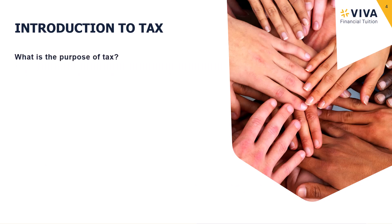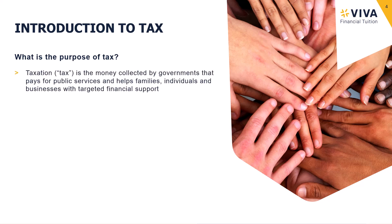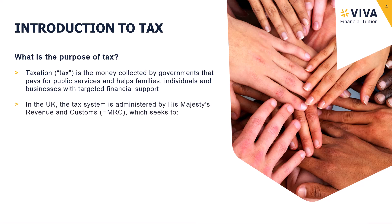Let's ask ourselves what is the purpose of tax? Tax is money that is collected by governments, which then use that central pot of money to pay for public services, but also to provide targeted financial support to those who need it. That targeted support may go to families, individuals, or businesses. In the UK, the tax system is administered by HMRC — His Majesty's Revenue and Customs.